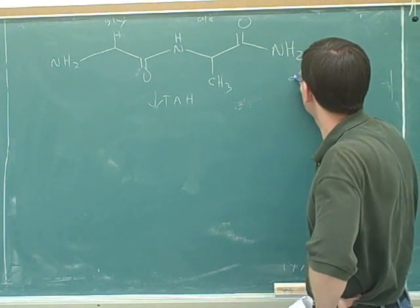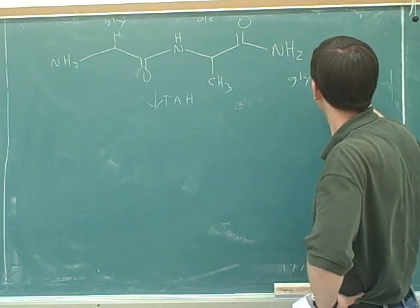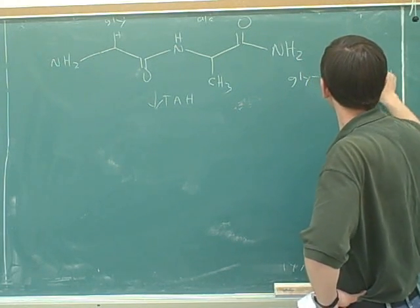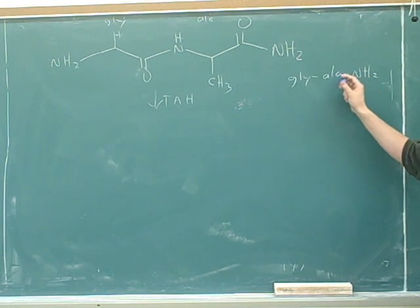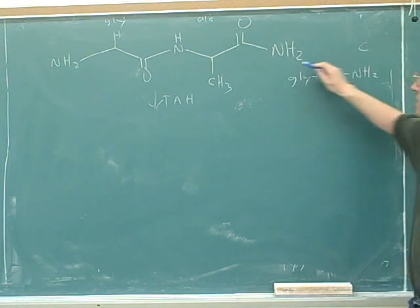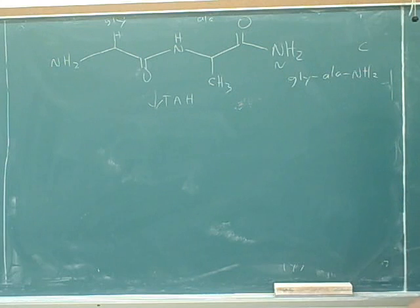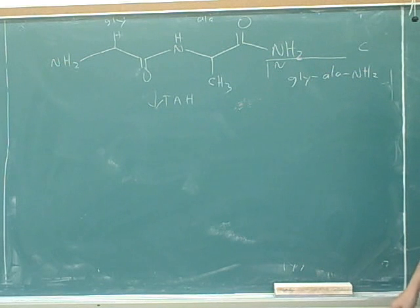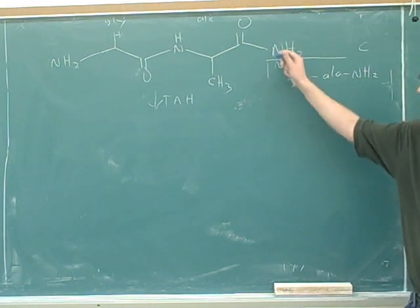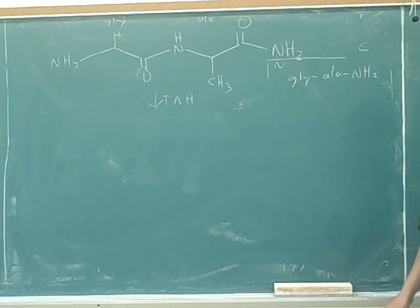By the way, this would be written as glycine-alanine-NH2. This is the notation to show that we've turned the C-terminus into an amide. And the C-terminus can become an amide. So it's possible that the original peptide actually had an amide at the C-terminus instead of a carboxy group.